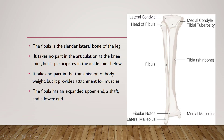The fibula is a slender lateral bone of the leg. It takes no part in the articulation at the knee joint. The knee joint is formed only by the tibia and the femur. The fibula takes no contribution in the formation of the knee joint, but it does participate in the formation of the ankle joint. It takes no part in the transmission of body weight, but it provides attachment to some muscles.